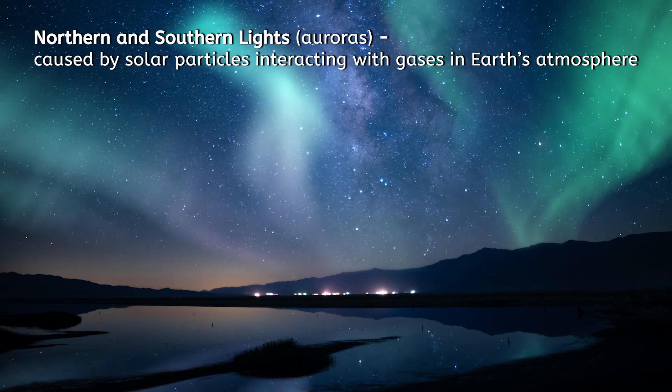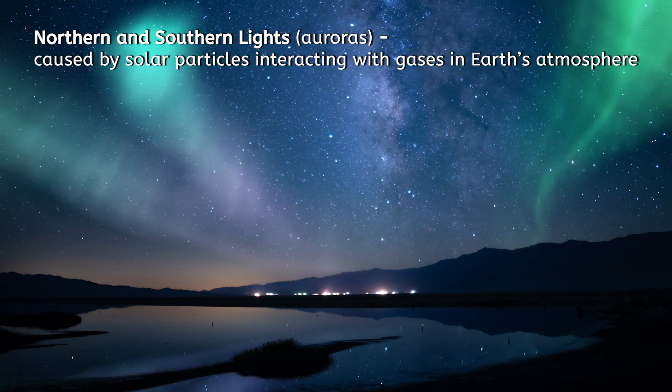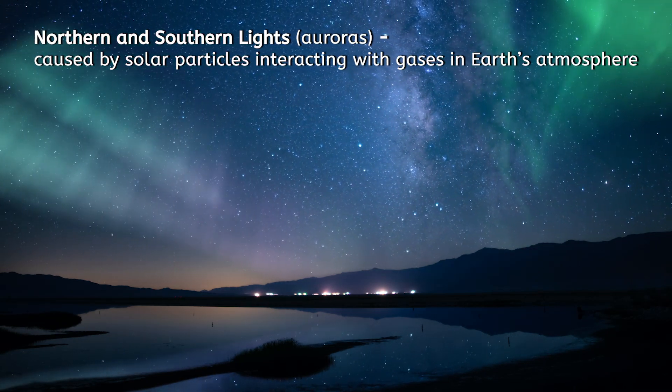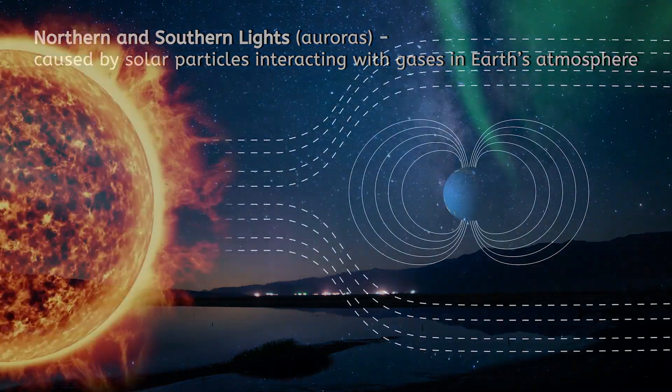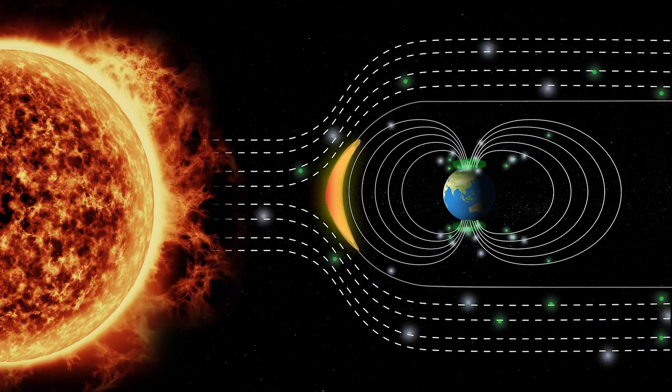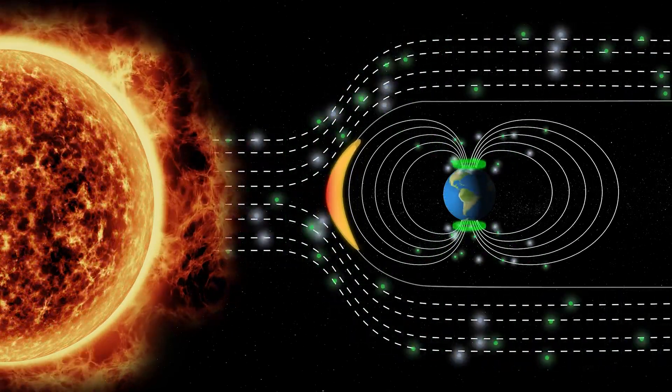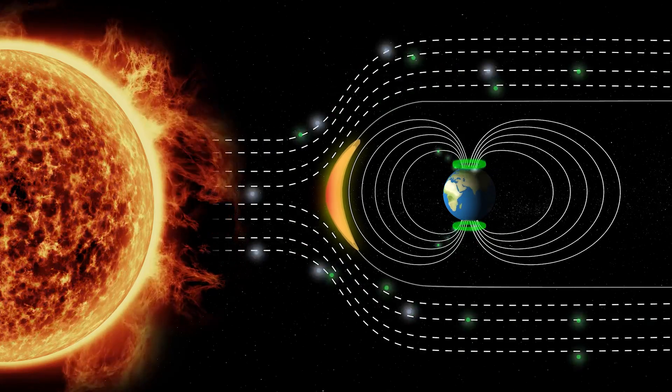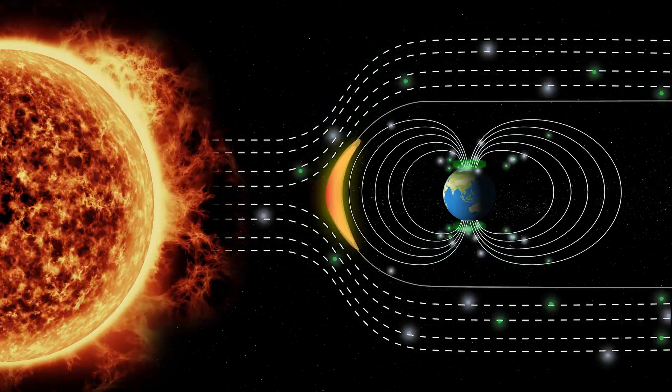These lights are commonly seen near the polar regions and are known as the northern and southern lights. They are usually only visible near the poles because of the shape of Earth's magnetic field. You can see here that the field lines guide the particles directly into the north and south poles.